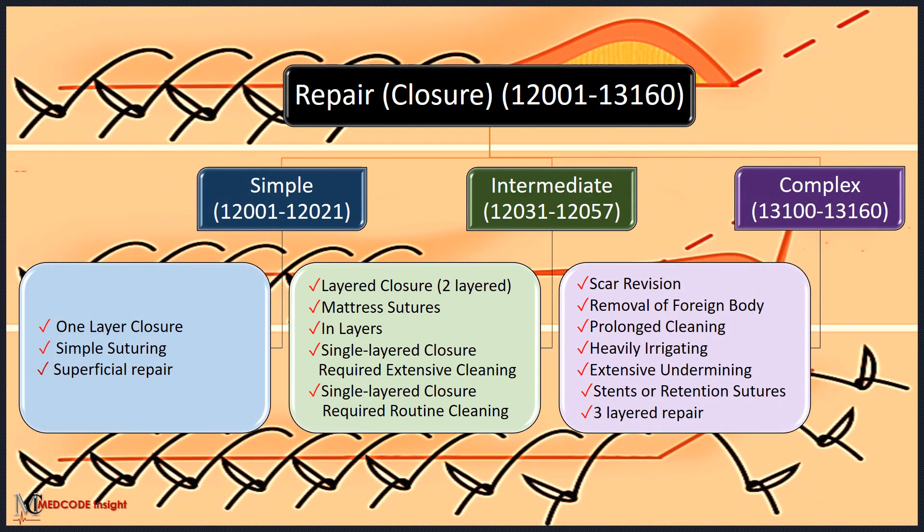Use the codes in the repair section to designate wound closure utilizing sutures, staples, or tissue adhesives, either singly or in combination with each other or with adhesive strips. There are three types of repair: simple, intermediate, and complex.